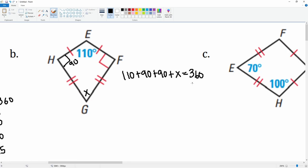Let's combine like terms here. We can add 110 plus 90 plus 90, that gets you 290 plus x equals 360. Subtract 290 from both sides, that gets you x equals 70 degrees.